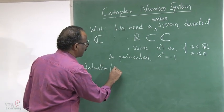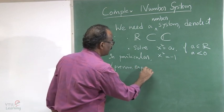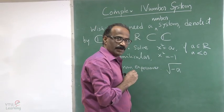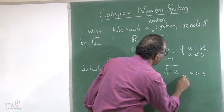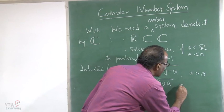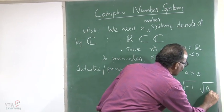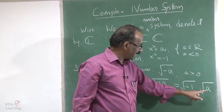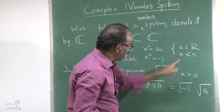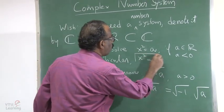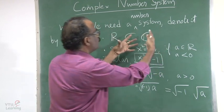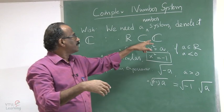From previous experience, if you want to define the square root of minus a with a positive, you can write it as minus one times a, and expect it to be √(−1) · √a. Since a is positive, √a is already defined as a real number. So if we can solve x² = −1, we can solve the equation for any negative a by this formula. It is enough to introduce one new object.